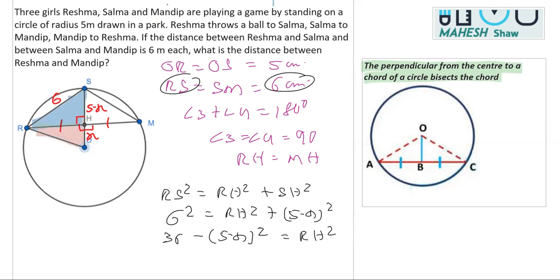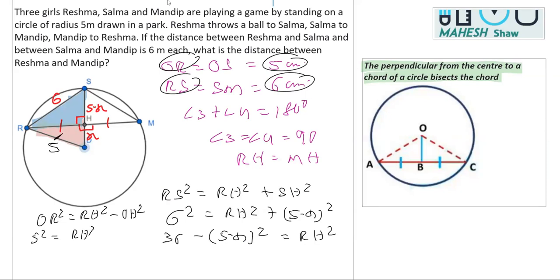Now let's apply Pythagoras in triangle ORH as well. OR is the radius, which is 5 centimeters, and OH equals x. So we can write: OR² = RH² + OH², giving us 25 = RH² + x², and therefore RH² = 25 − x².